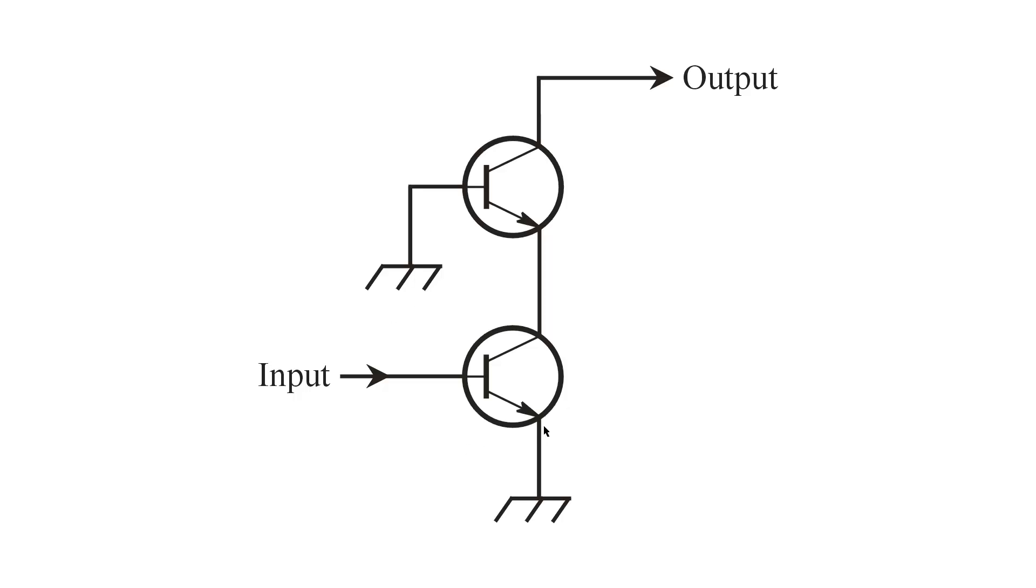And so the emitter is grounded in the first one, and the base is grounded in the second one. The two together have more gain, theoretically, than a single device could have, although the grounded emitter stage usually has more gain than the grounded base stage.